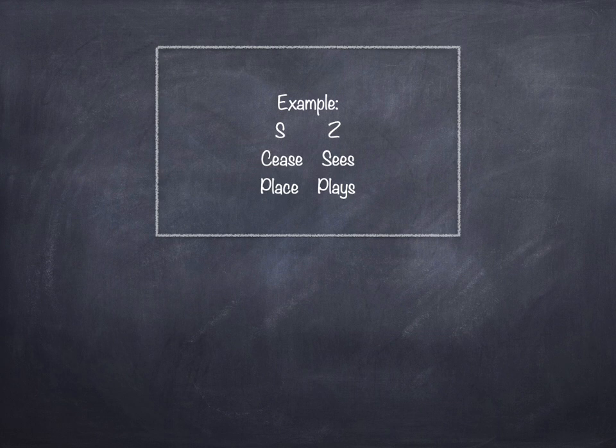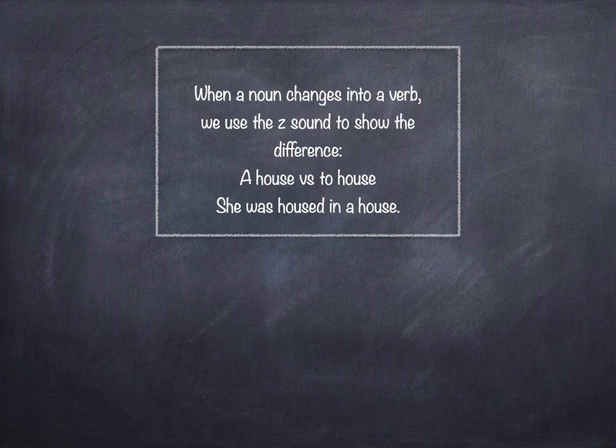Place, place. When a noun changes into a verb, we use the zzz sound to show the difference. A house versus to house. She was housed in a house.